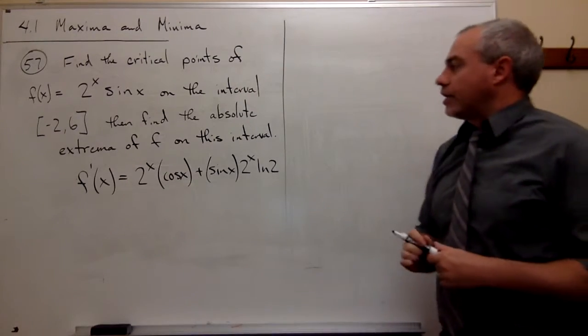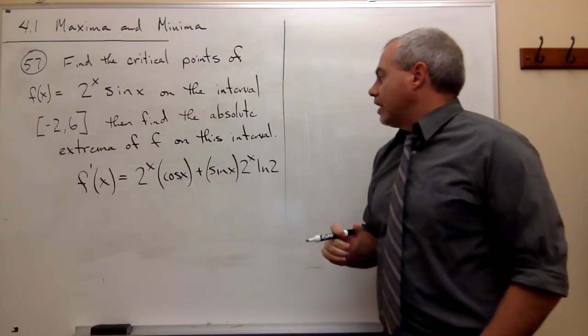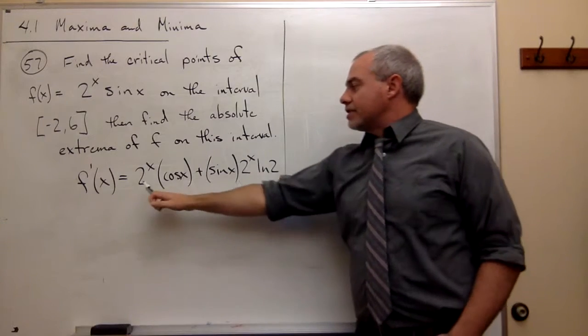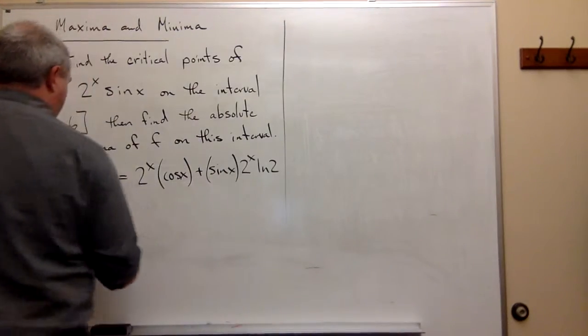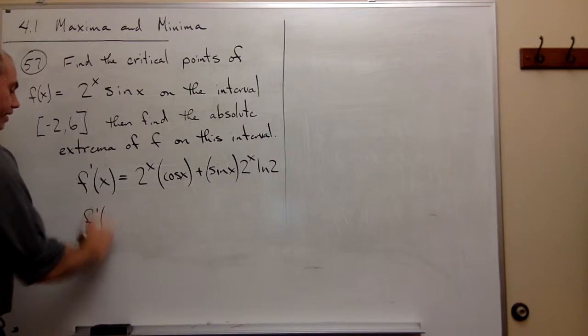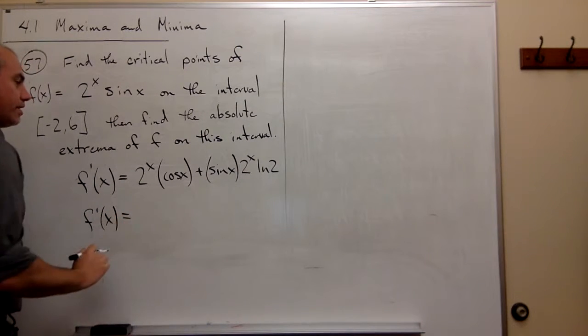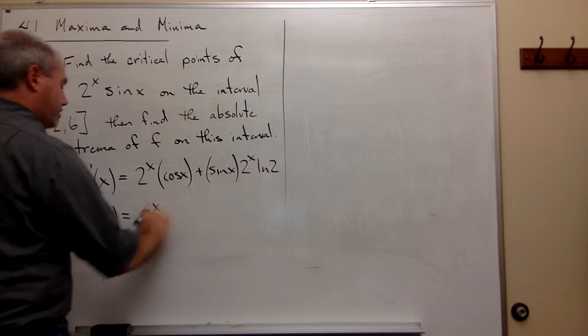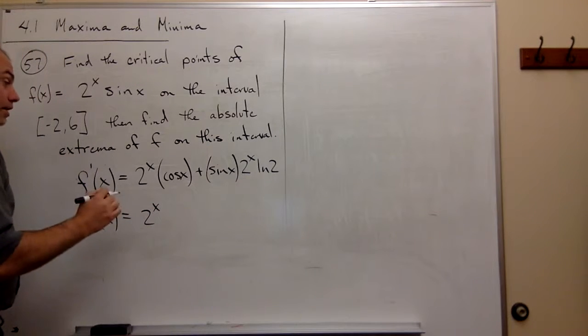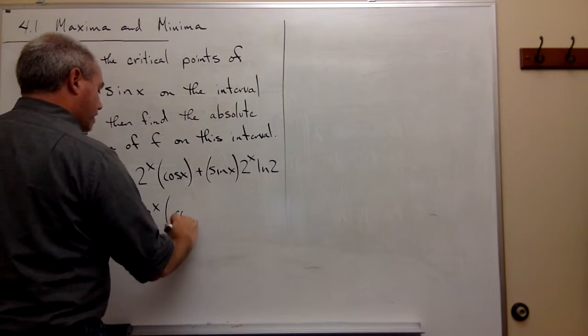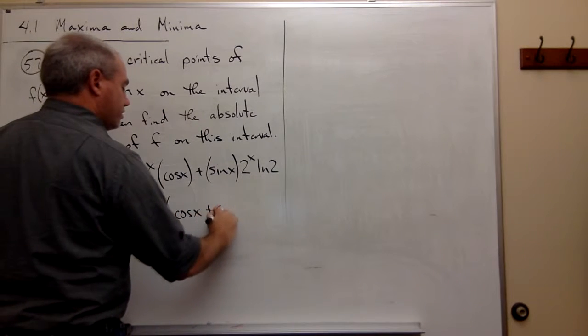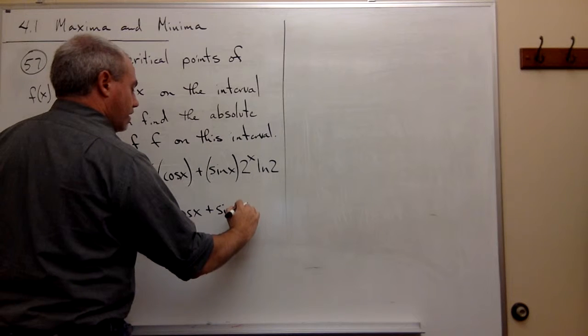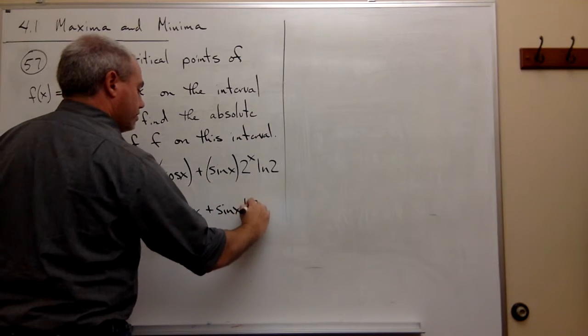So here is our derivative, and you notice that there's a 2 to the x in both cases, in both of these terms. So let's factor that out, and I get f prime of x is equal to 2 to the x, times cosine x, plus sine x, times ln of 2.